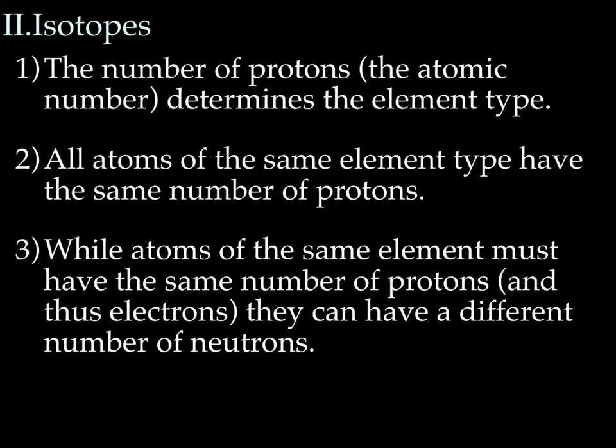Alright, on to isotopes. The number of protons, which is the atomic number, determines the element type. So all atoms of the same element type have the same number of protons. We discussed this in the last lecture. Every single carbon you meet is going to have 6 protons. Every single sodium you meet is going to have 11. Every neon you meet is going to have 10 protons. So it's actually the number of protons that determines the type of atom it is.